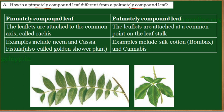First of all, a compound leaf. When many leaves are present together, we call it a compound leaf. Here also we can see more than one leaf present together, so we call them a compound leaf. In a compound leaf, these leaves are called leaflets.